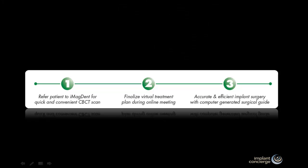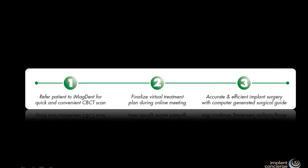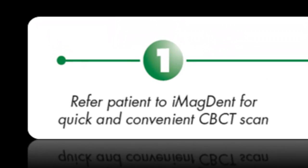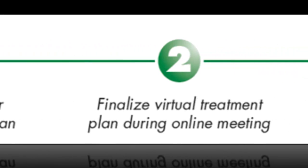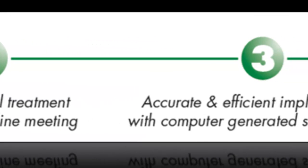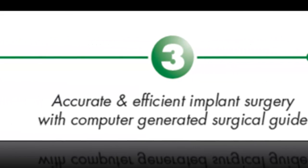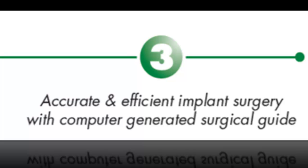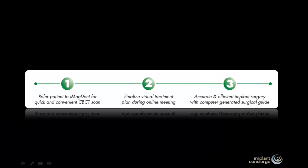The process to go from scan to plan to guide will be completed in three steps. Step one: refer the patient to ImageDent for a cone beam CT scan. Step two: finalize the virtual treatment plan during a convenient online meeting with a 3D treatment planning technician from ImageDent. Step three: surgery, utilizing the CAD-CAM surgical guide.